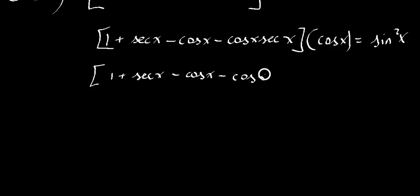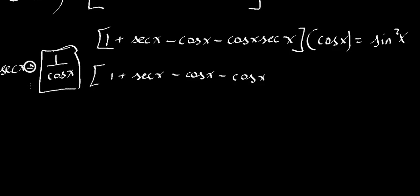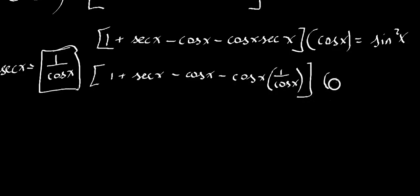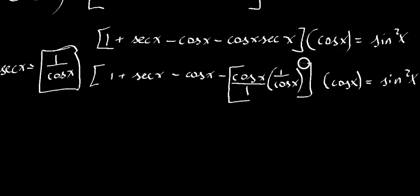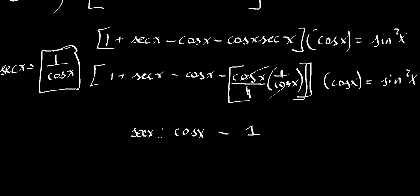Let's simplify. What is secant? Secant is the reciprocal of cosine, so we can rewrite secant as 1 over cosine x — this comes from your reciprocal identity. We're still multiplying. Cosine x times 1 over cosine x: same numerator and denominator cancel, and you have 1 over 1, which is just 1. So we're left with a 1.